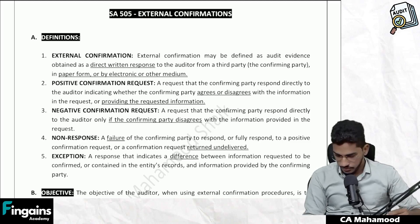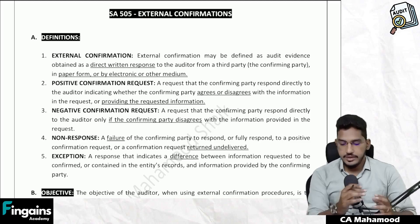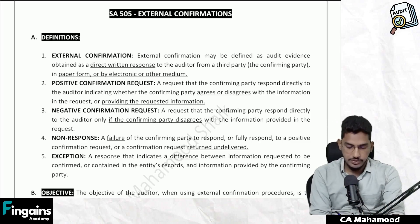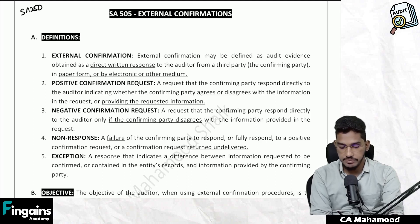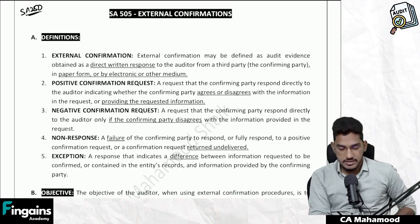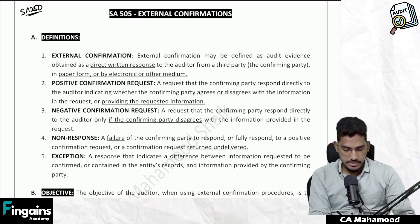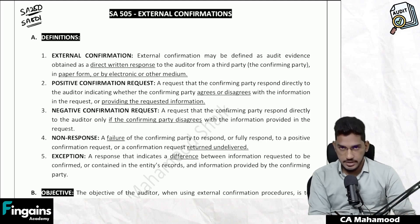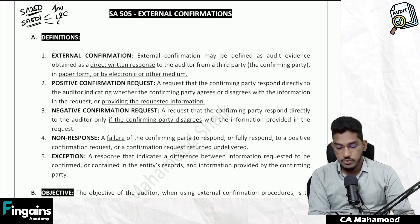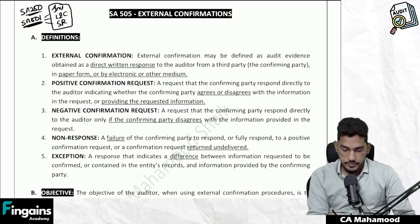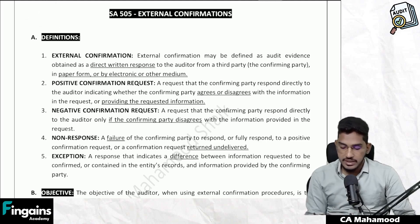Hello, my dear students, welcome back. In the previous session we were discussing the standards on auditing. We completed SA 250, which talks about the auditor's responsibilities relating to laws and regulations while conducting an audit of financial statements. We also understood SA 501, which talks about specific considerations for selected items. In this class we will begin discussing the next standard, SA 505.